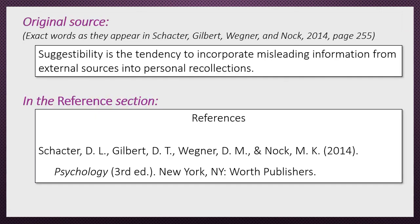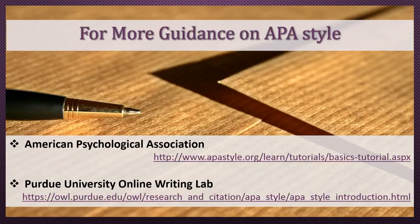Do not include in the reference section anything that was not cited within the text of the paper. In other words, your in-text citations and your reference list should match up. If you want to learn more about how to cite and reference properly in APA style, you may want to check out these two wonderful online and free resources: the Basics of APA Style free tutorial by the American Psychological Association, and the Purdue University Online Writing Lab's webpage on APA style.